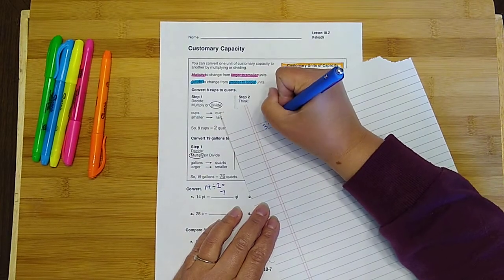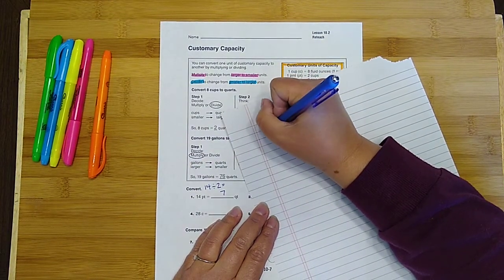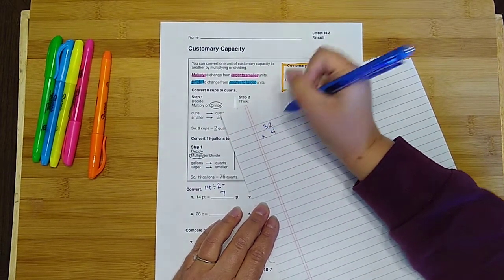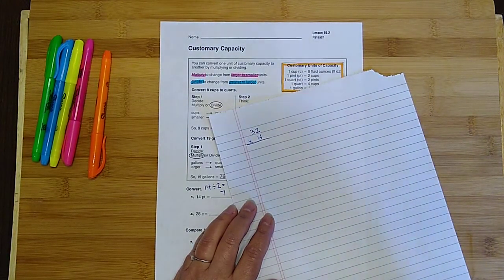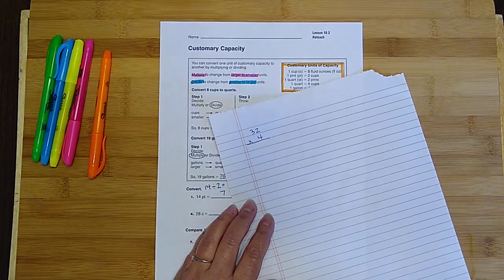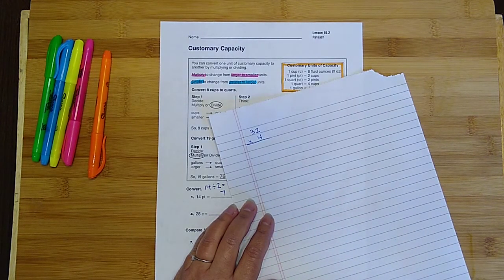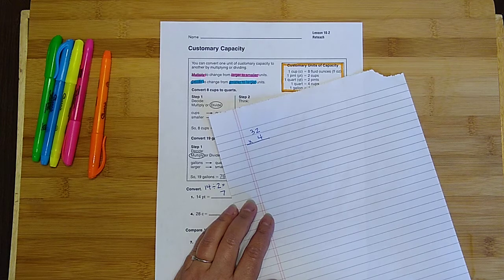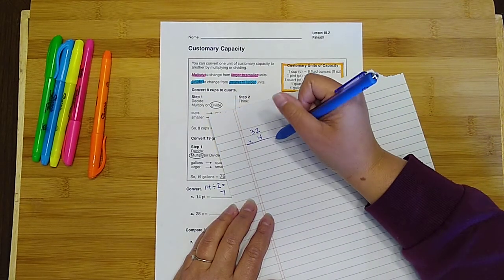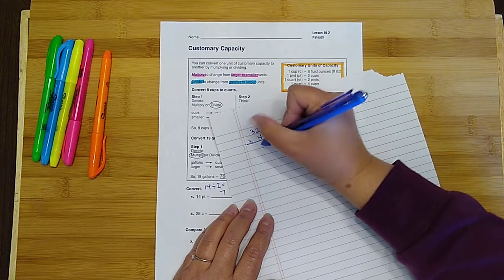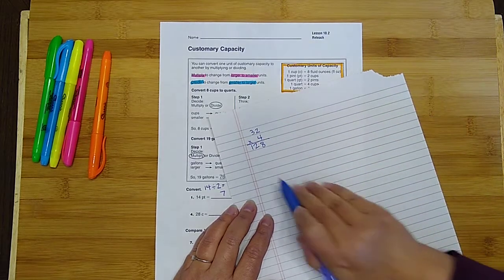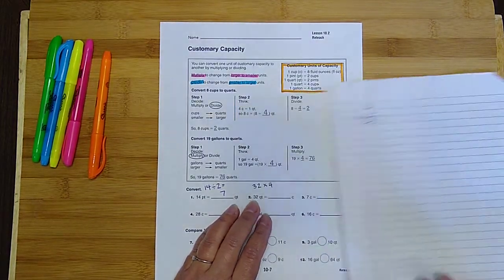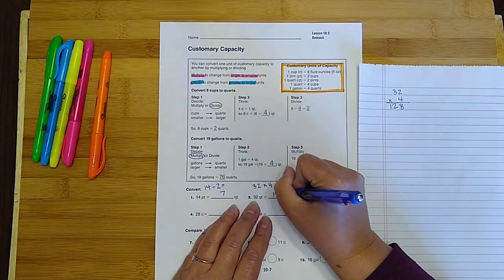That's kind of a big math problem and we don't have our 32s memorized. So we'll do 32 times 4, and we're gonna do it like that. Go ahead and pause the video and see if you can do this math problem on your own. Okay, how did you do? Let's see if we, you and I, get the same answer, okay? 4 times 2 is 8. 4 times 3 is 12. Did you get 128? If you did, that's the right answer.